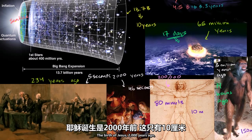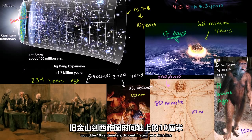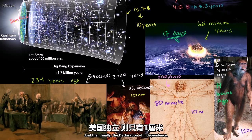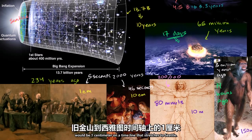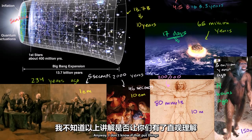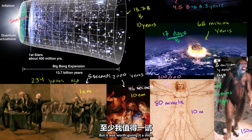The birth of Jesus, 2,000 years ago, would be 10 centimeters on a timeline that stretches from San Francisco to Seattle. And the American Declaration of Independence would be just one centimeter on that same timeline. Anyway, I don't know if that put things in more or less perspective, but it was worth giving it a shot.